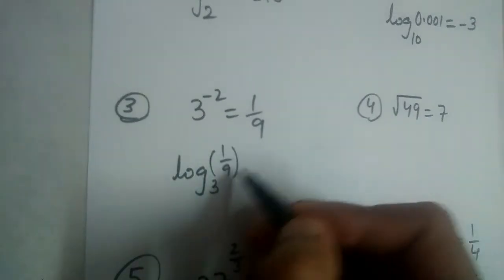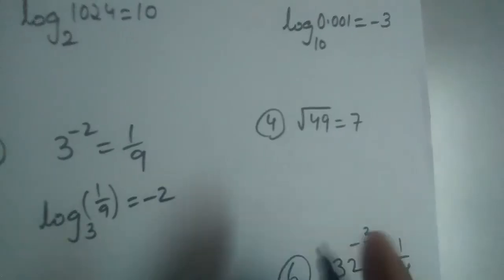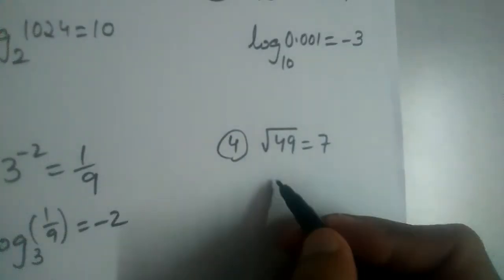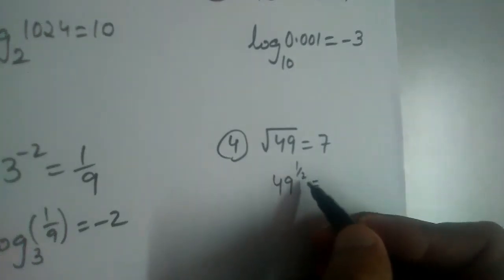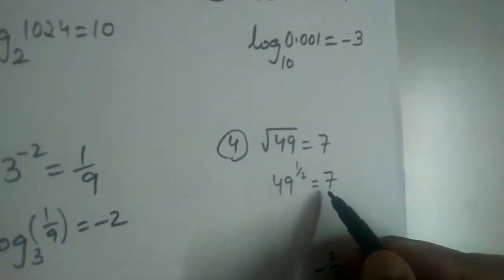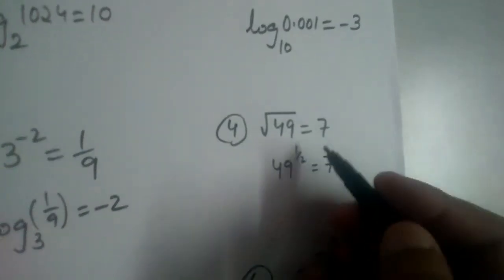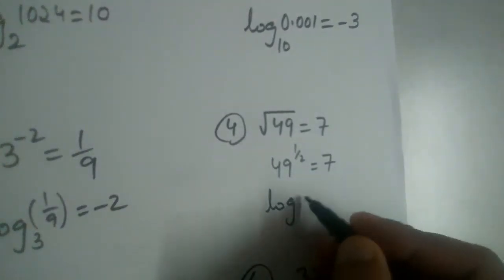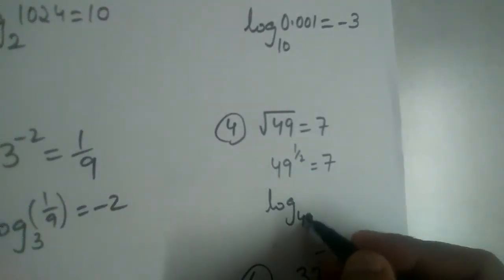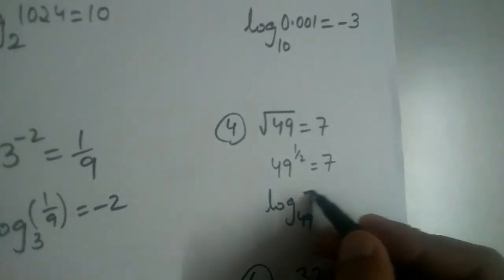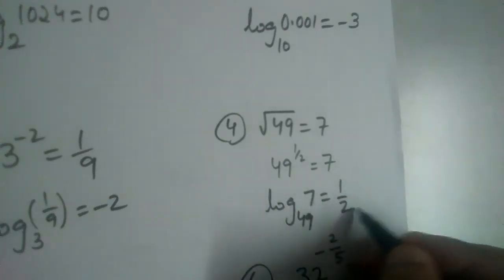So root 49, let us write it as 49 power 1 by 2 equal to 7. Root means it is 1 by 2, so log base 49 and 7 here, it is equal to 1 by 2.